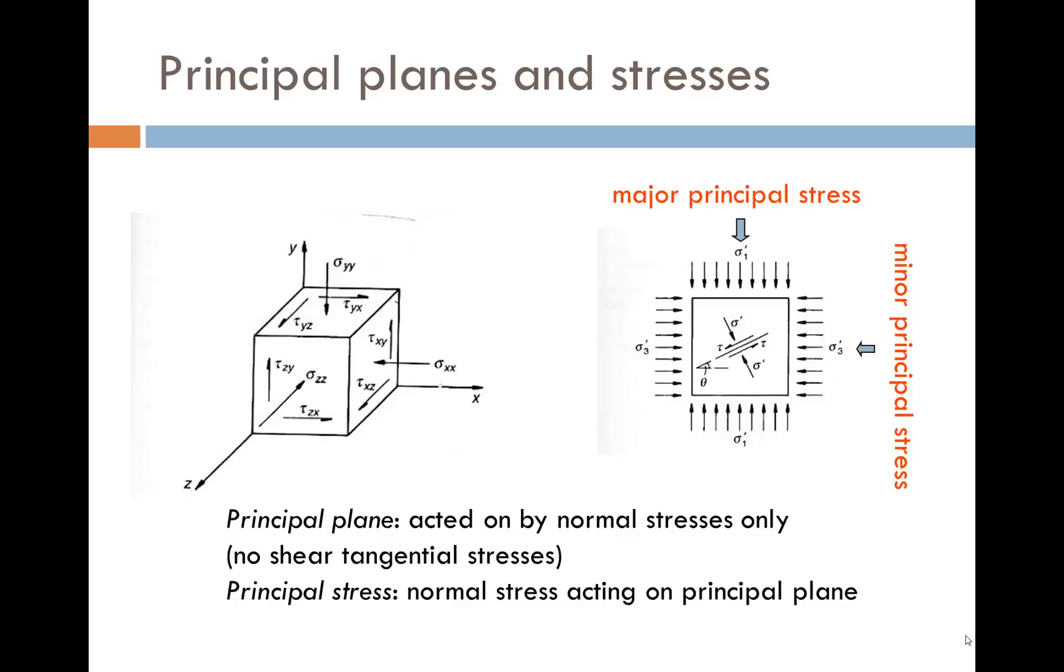On the left, we see a general state of stress for a small element of a material. There is one normal stress and two shear stresses acting on each of the faces of the cube. When a face is acted on by a normal stress only and the shear stresses are zero, the plane is referred to as a principal plane and the stress is referred to as the principal stress.